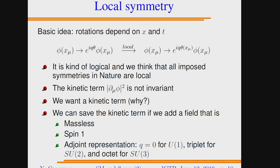For SU(2), the gauge field is not a singlet — it's a triplet, a spin-1 under SU(2). For SU(3), it's an octet. This is a fundamental difference between abelian and non-abelian symmetries: in the abelian case the gauge boson has Q=0, while for non-abelian symmetries the gauge boson itself is charged under the symmetry. From a purely mathematical standpoint, the only consistent quantum theories we can write are spin-0, spin-1/2, and gauge bosons (spin-1). That's remarkably what we see in nature.